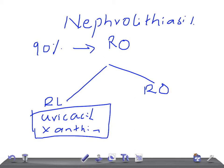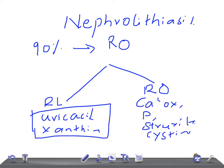Regarding radio opaque calculi, there are many types. Very common are calcium oxalate and phosphate stones. Then we have struvite stones, cysteine stones, and matrix stones.